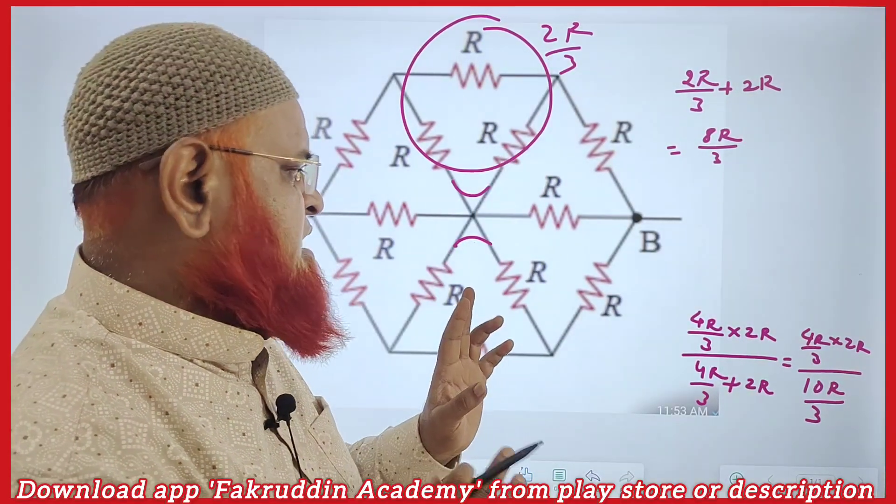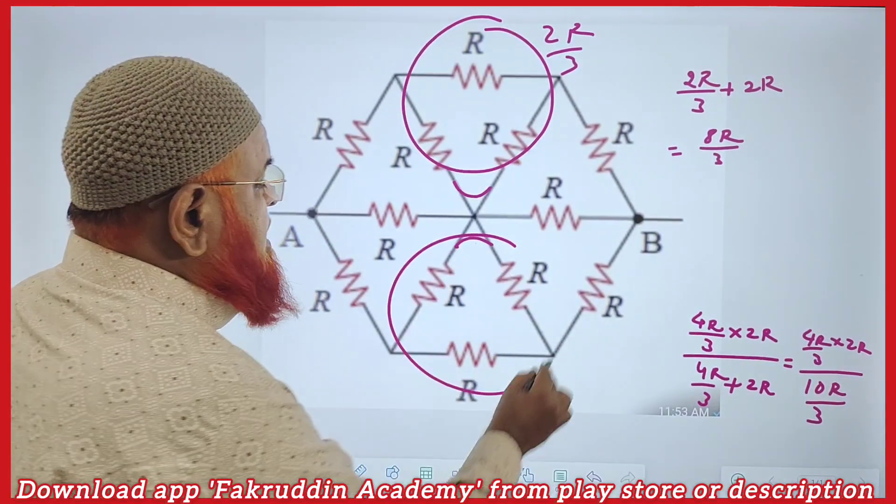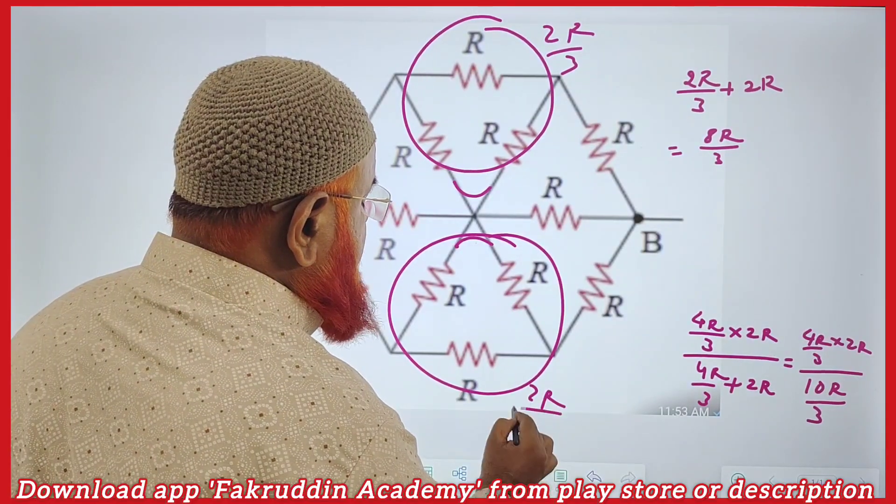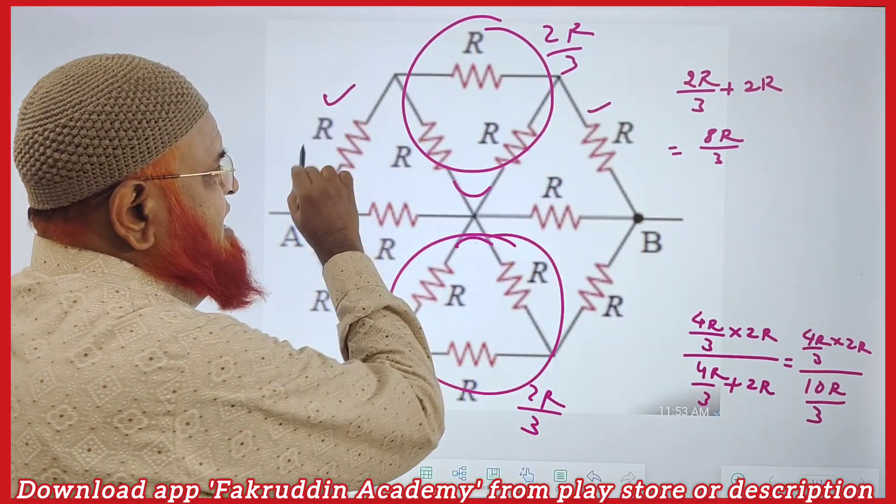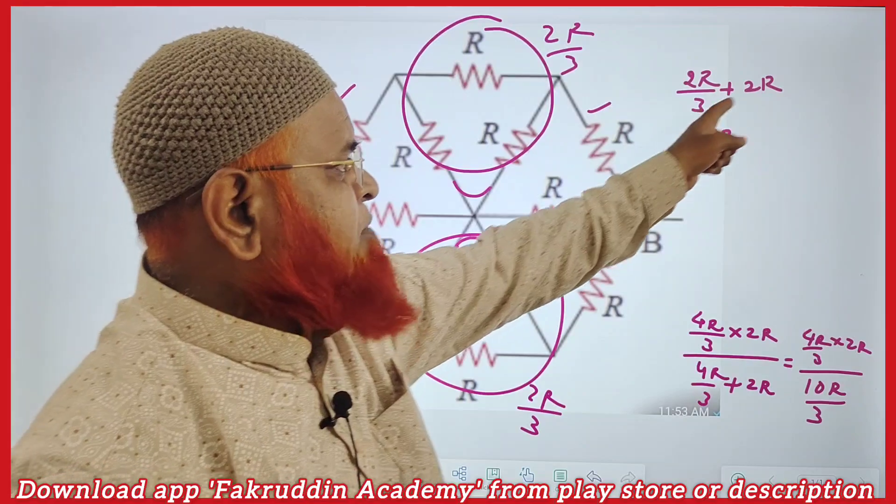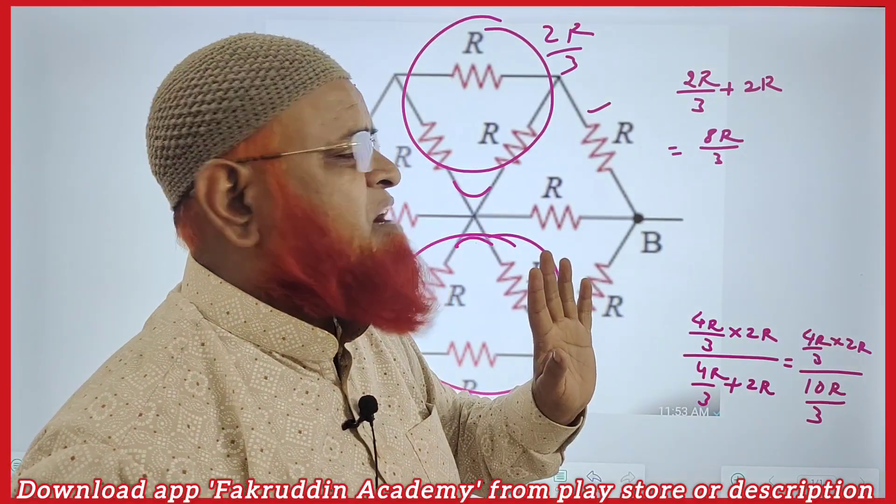this is R gives you 2R by 3. Similarly, this part also gives you 2R by 3. And this is R and this is R, R plus R equals 2R. So 2R by 3 plus 2R gives you 8R by 3,